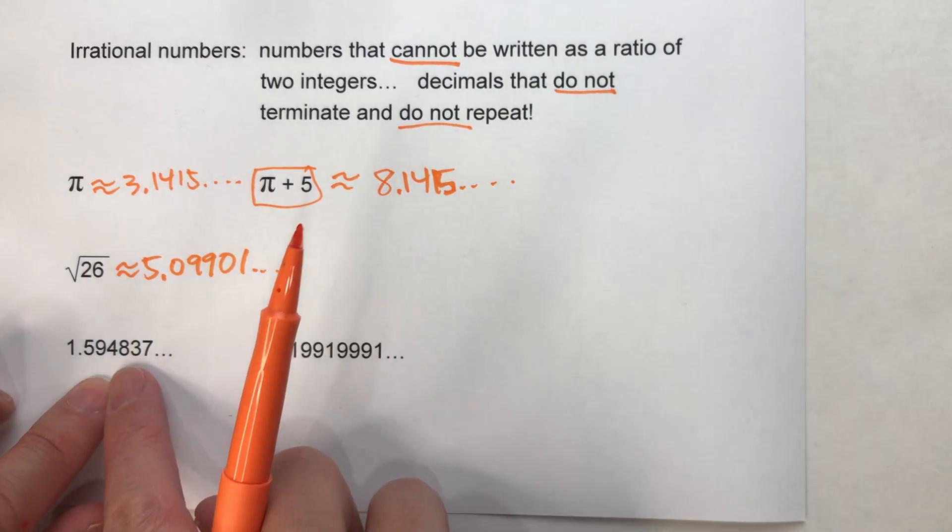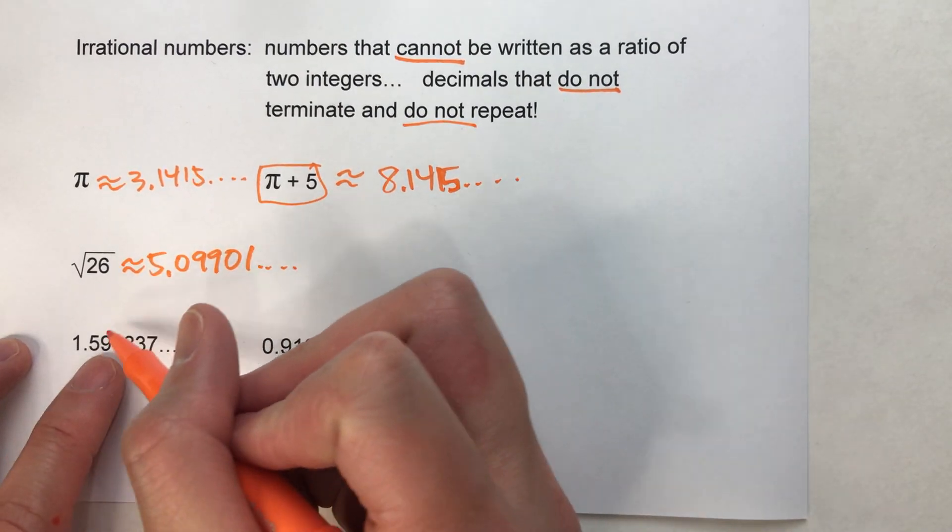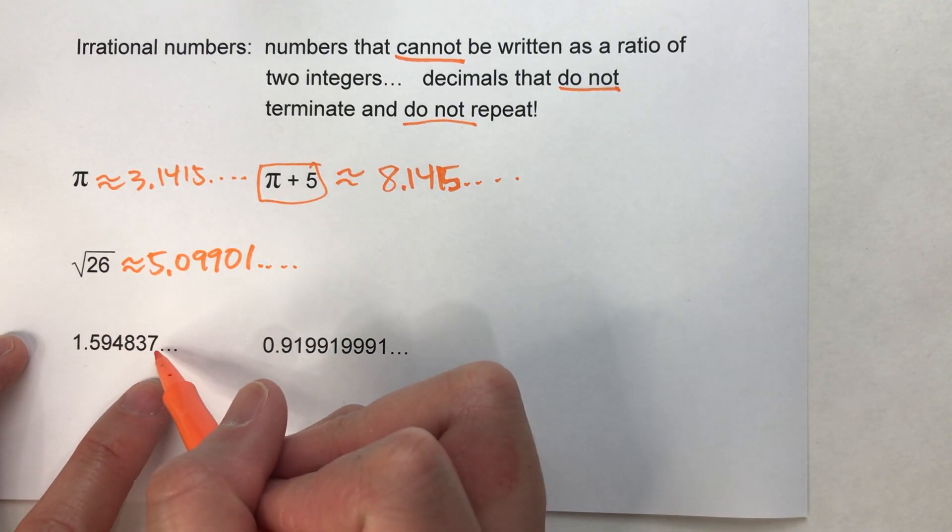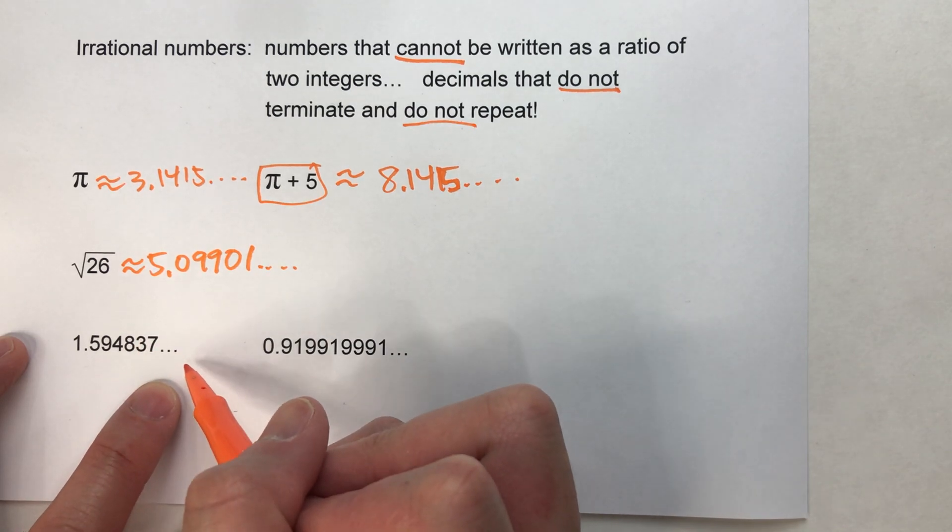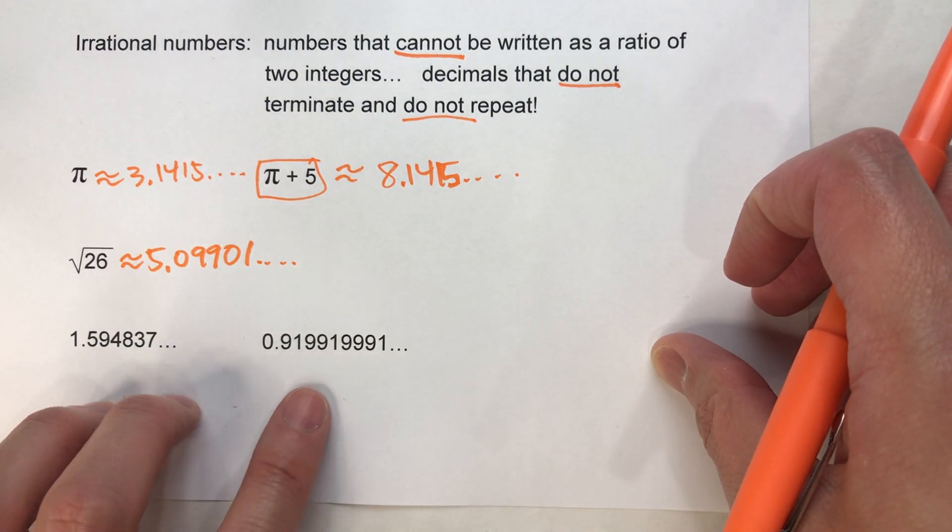And then, here are some more examples of irrational numbers. Notice, the way we write irrational numbers is we just write out those digits and then put the dot dot dot after it, to show that the numbers keep going but there's no clear-cut pattern to this, so we know that there is no repeating pattern to it.